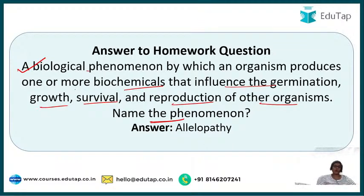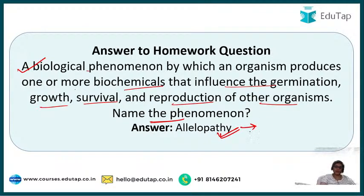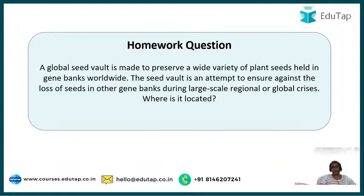Sorghum also releases hydrocyanic acid, which is toxic to some types of weeds. Allelopathy is one important factor the farmer needs to consider while going for intercropping. Eucalyptus is also a well-known example — it does not allow other plants to thrive around it.